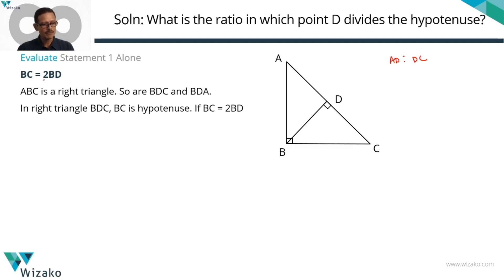Statement 1 says BC, this is BC, is equal to 2 times BD. Let's say BD is equal to A. Then BC is going to be equal to 2A. BDC is a right triangle. Obviously, if BD is perpendicular to AC, BDC is a right triangle.